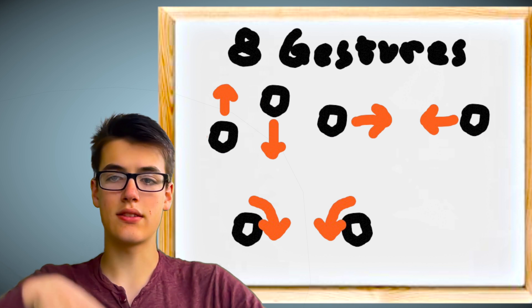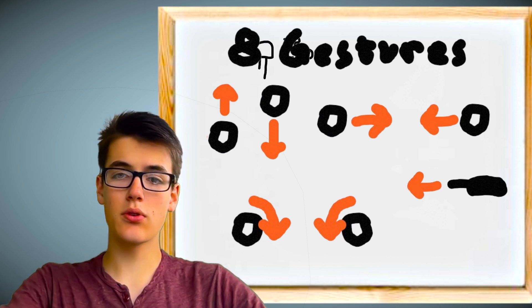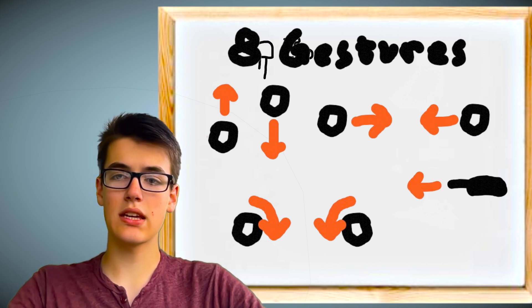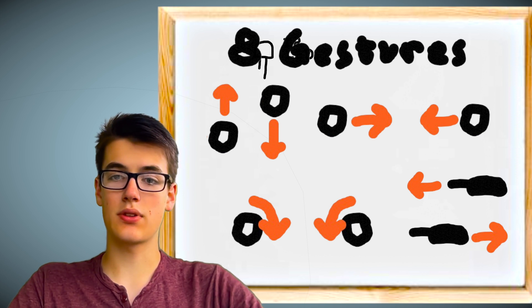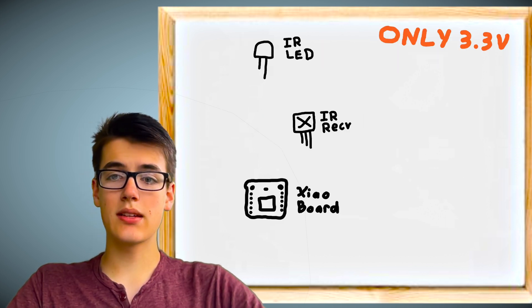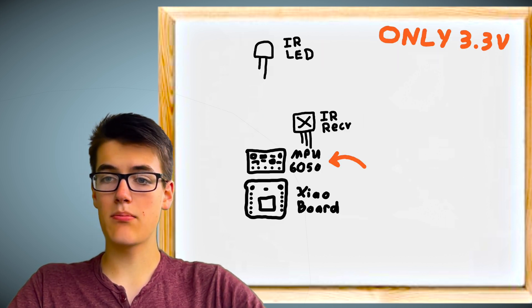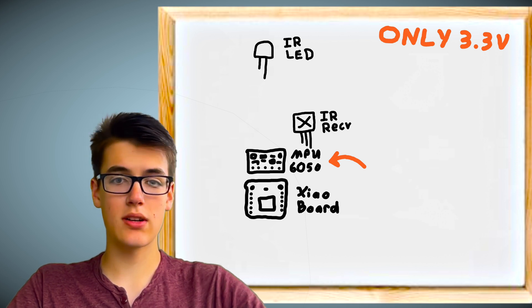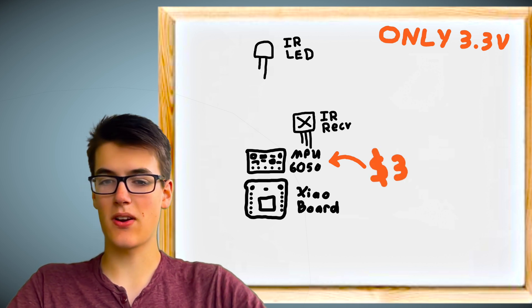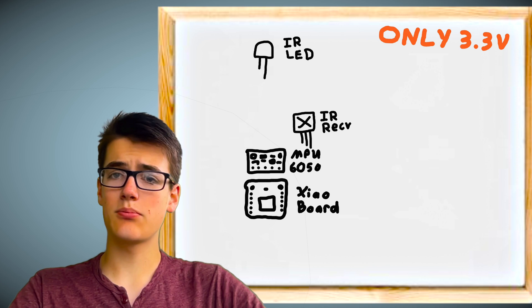We'll also have a rotate clockwise and rotate counterclockwise, which will work nicely for volume up and down. And we'll have the push forward, which makes sense for clicking on something, and the pull back, which makes sense for the back button. All of this can be done simply by using the MPU 6050 accelerometer and gyroscope, which isn't even very expensive.